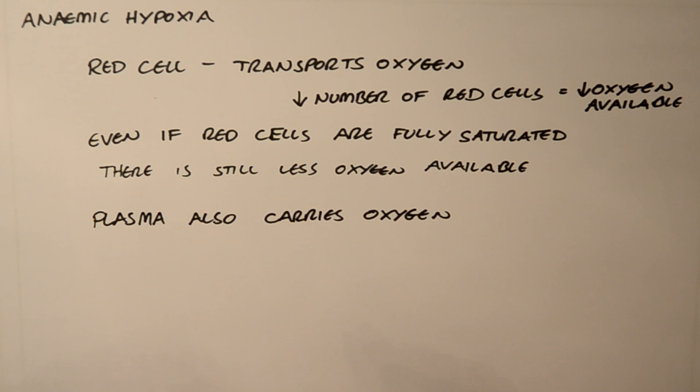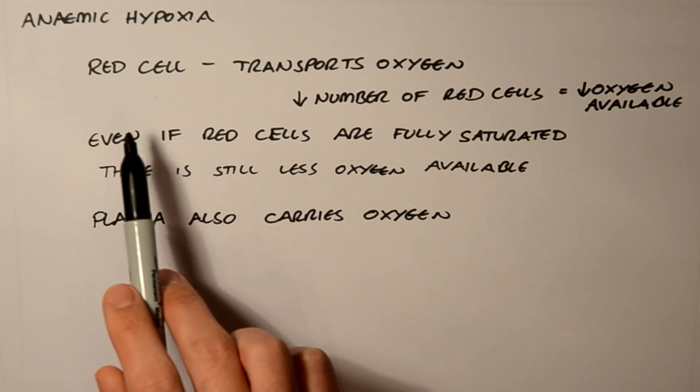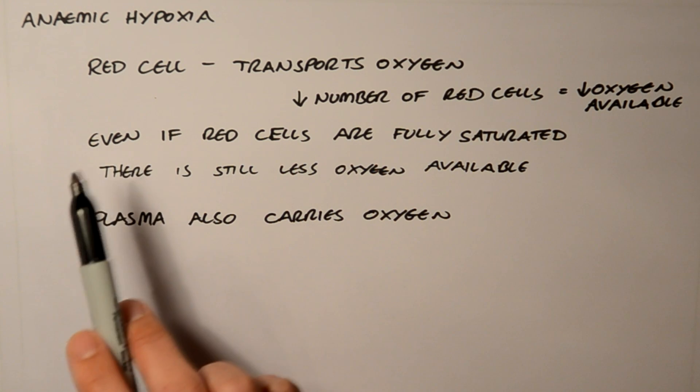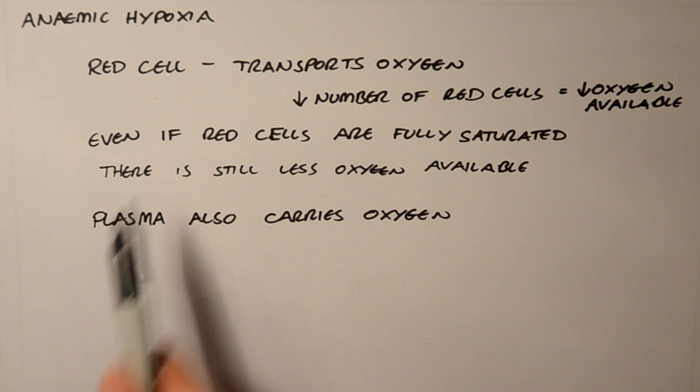But if you place a person into a hyperbaric chamber, you can force more oxygen into the plasma and increase its effective carrying capacity. They've used this, for example, in Jehovah's Witnesses who refuse blood transfusion, in order to try and increase oxygen delivery to the tissues. But remember that the red cell is the main carrier of oxygen. So if someone is anemic, they might be hypoxic.